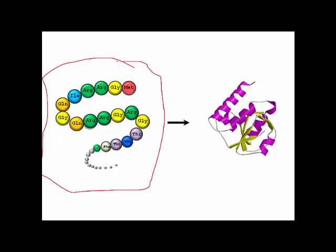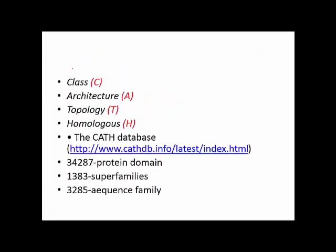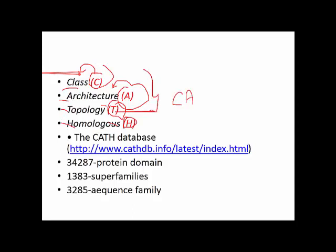Before learning CATH, let's review a few basic things. The sequence of amino acids is called the primary structure of a protein. This sequence organizes to create a secondary structure, and from the secondary structure the tertiary structure is formed, and then there is the quaternary structure — that is basic biochemistry. Now, CATH stands for: C = Class, A = Architecture, T = Topology, and H = Homology. By these four words, CATH — C-A-T-H — is created.